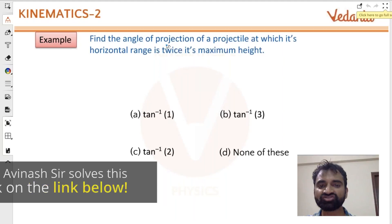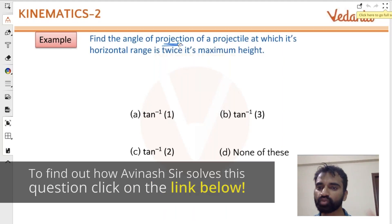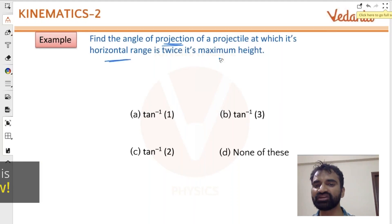At what angle of projection of a projectile will the maximum range be twice the maximum height?